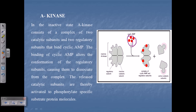This cyclic AMP will directly act on A-kinase or protein kinase A. As a result, we will see different activities. First, let's talk about the structure of protein kinase A. As we can see in this picture, protein kinase A is actually a tetrameric protein. Among this tetramer, two are dimers which are a homodimer, and another two form another homodimer.